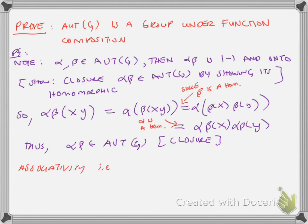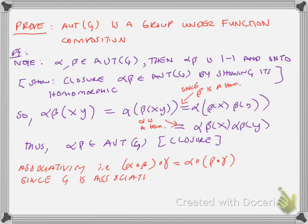For associativity: (alpha∘beta)∘gamma = alpha∘(beta∘gamma). We know this will always be true since G is associative because it's a group.